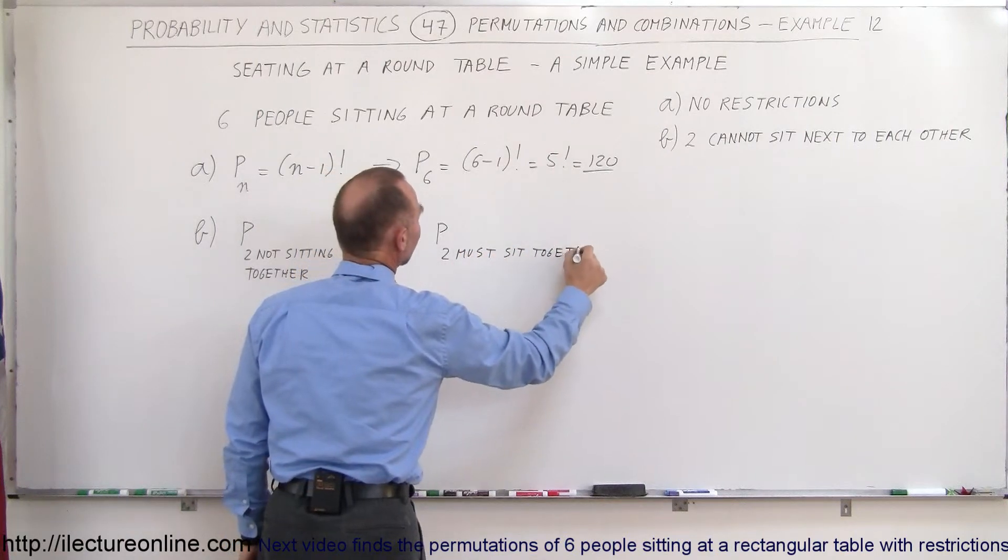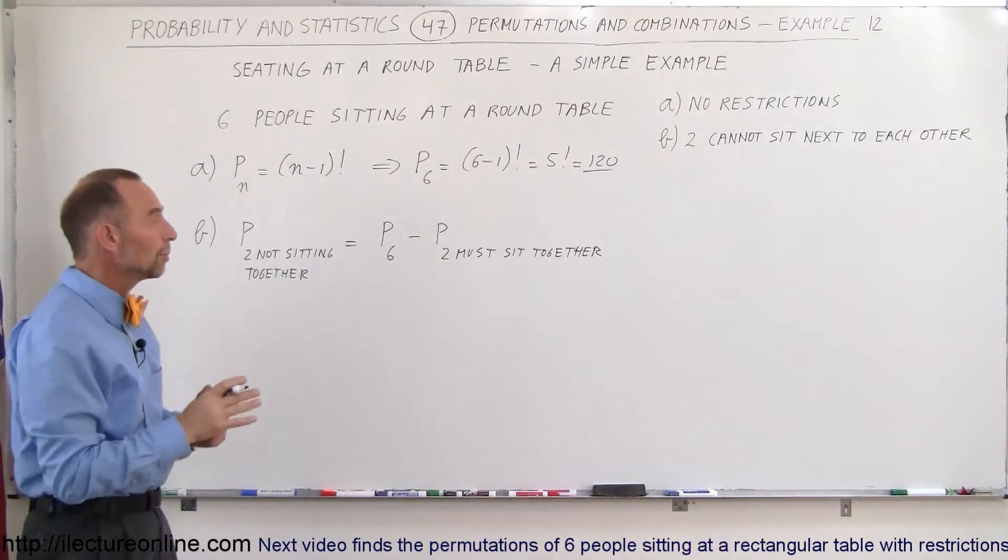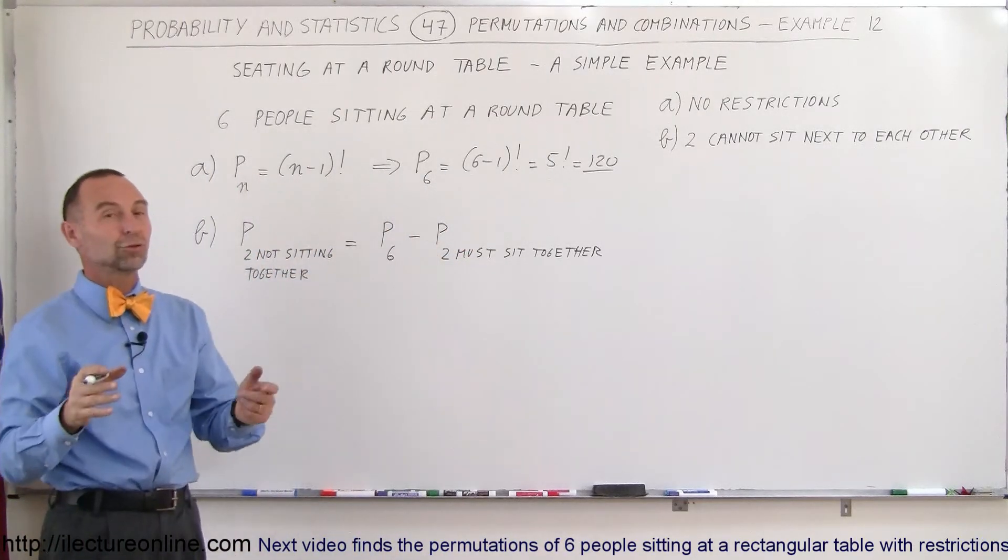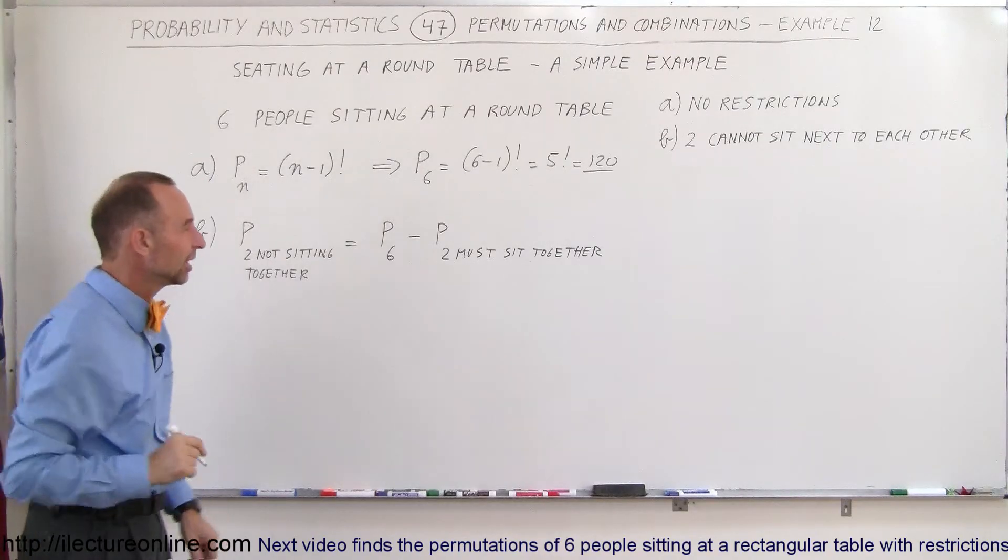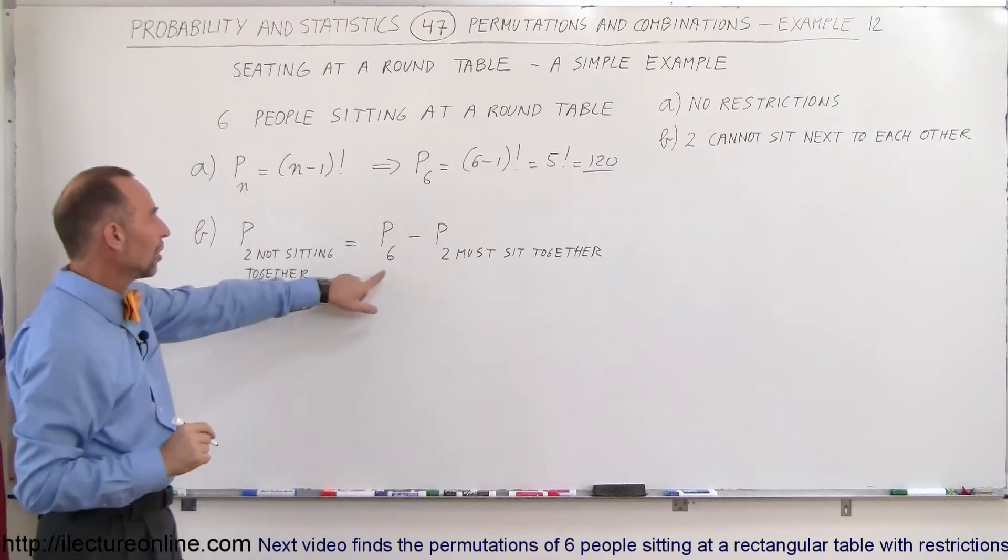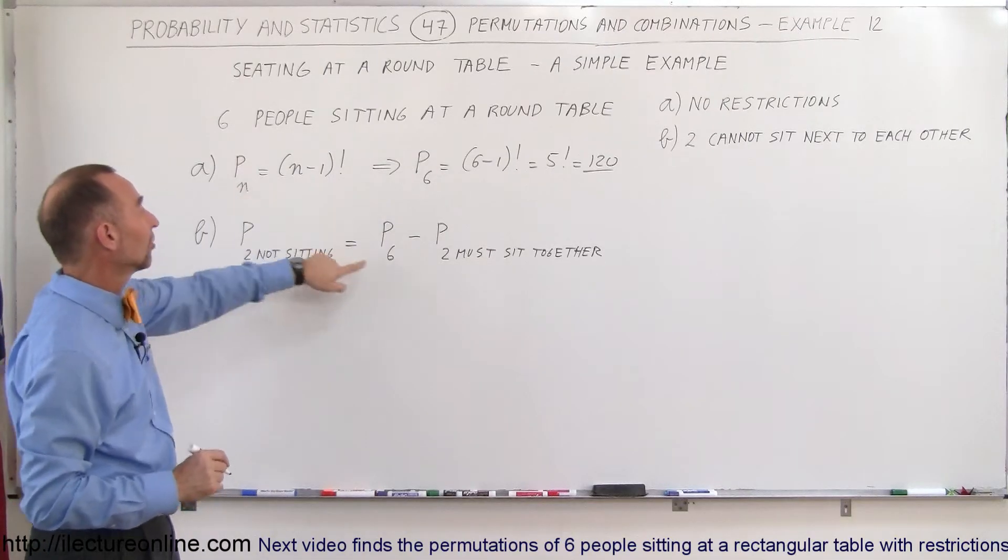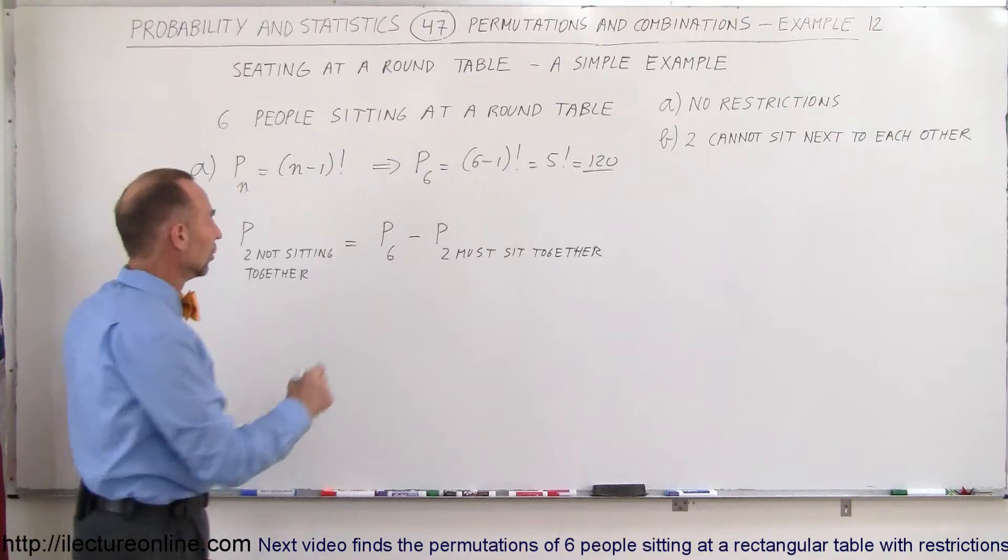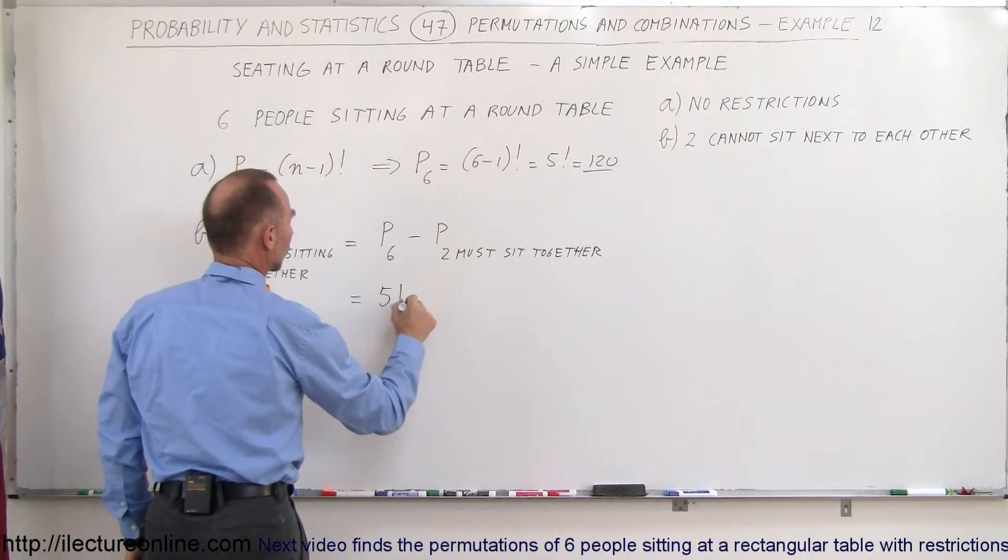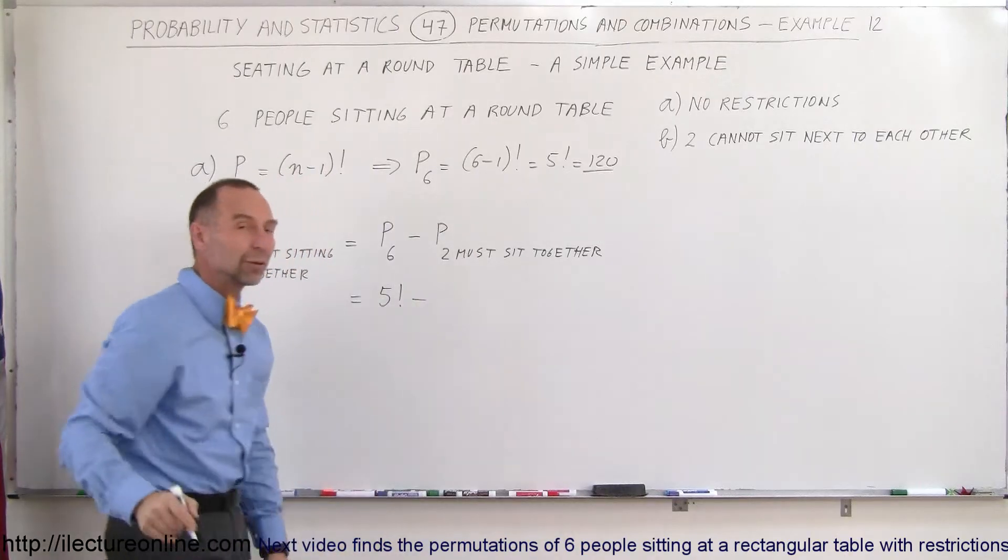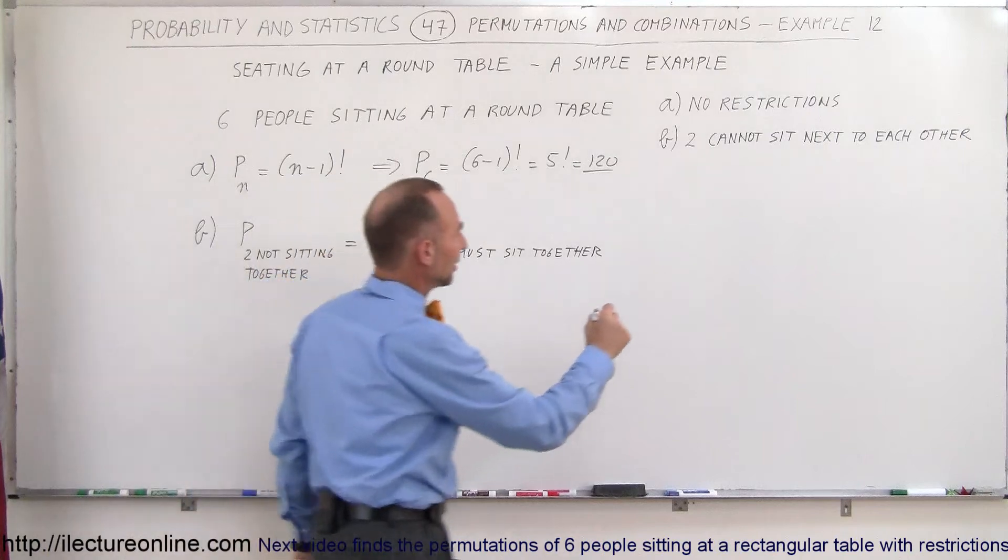And the reason why we do it like this is because it's easier to find the number of permutations where two people must sit together. First of all, this is easy, we already have that worked out right here, so this is simply going to be five factorial. So this is going to be equal to five factorial minus, now we have to figure out what that is equal to. Well let's do it on the side right here.